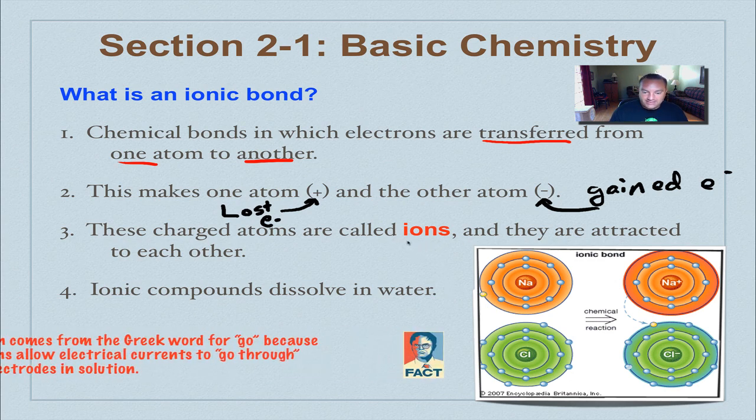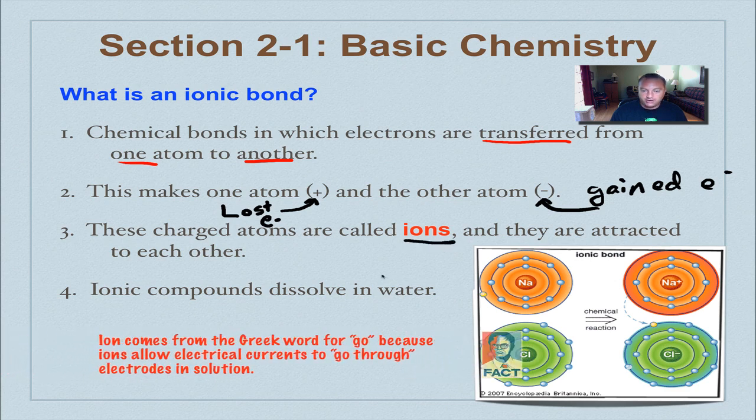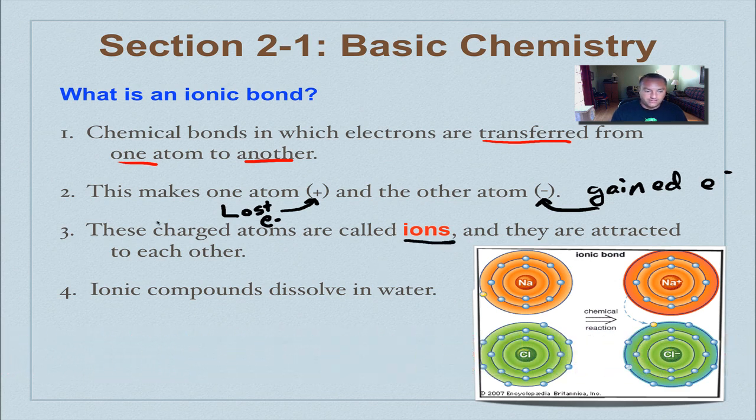Now, atoms that have gained or lost an electron are called an ion. So ions are a charged particle. In other words, they have an electric charge. Think of an atom with an electric charge, either a positive charge or a negative charge. So you'd have a positive ion and you would have a negative ion.